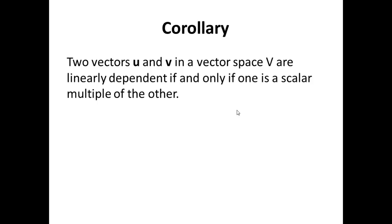Corollary: two vectors U and V in a vector space are linearly dependent if and only if one is a scalar multiple of the other. This follows directly from the theorem — U and V being linearly dependent means there exist alpha1 and alpha2, not both zero, such that alpha1·U plus alpha2·V equals zero. Thank you very much. I'll see you next time.